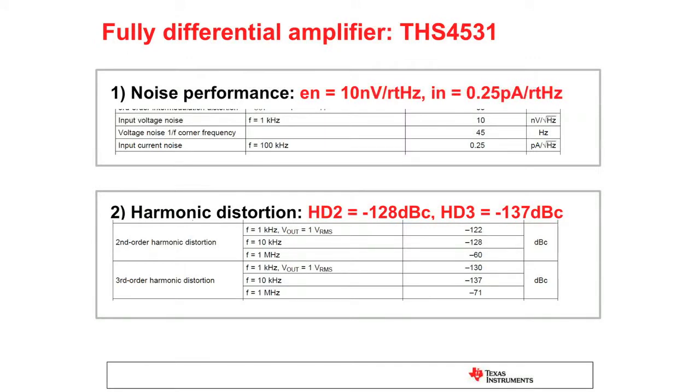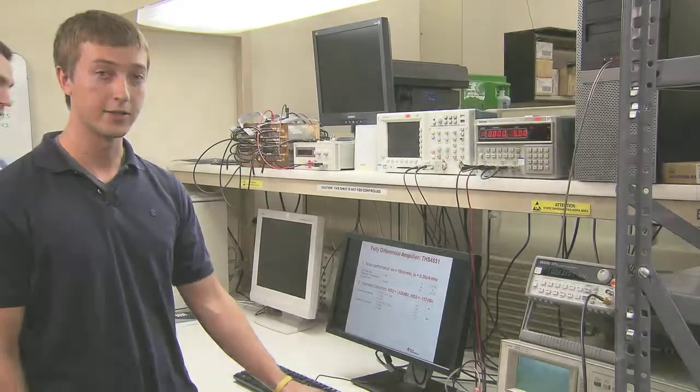When you are looking for the performance metrics in the datasheet, the SNR and SFDR, like I said, they're listed as nanovolts per root hertz and picoamps per root hertz, whereas the SFDR or harmonic distortion is listed as HD2 and HD3. So, those are important metrics that you need.